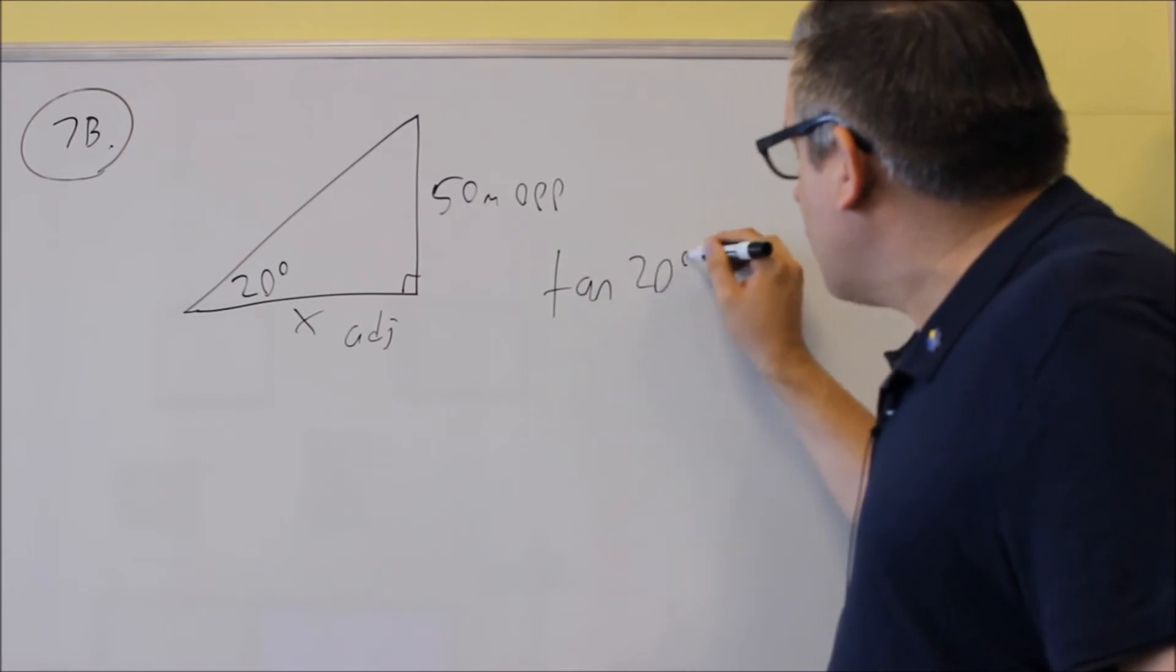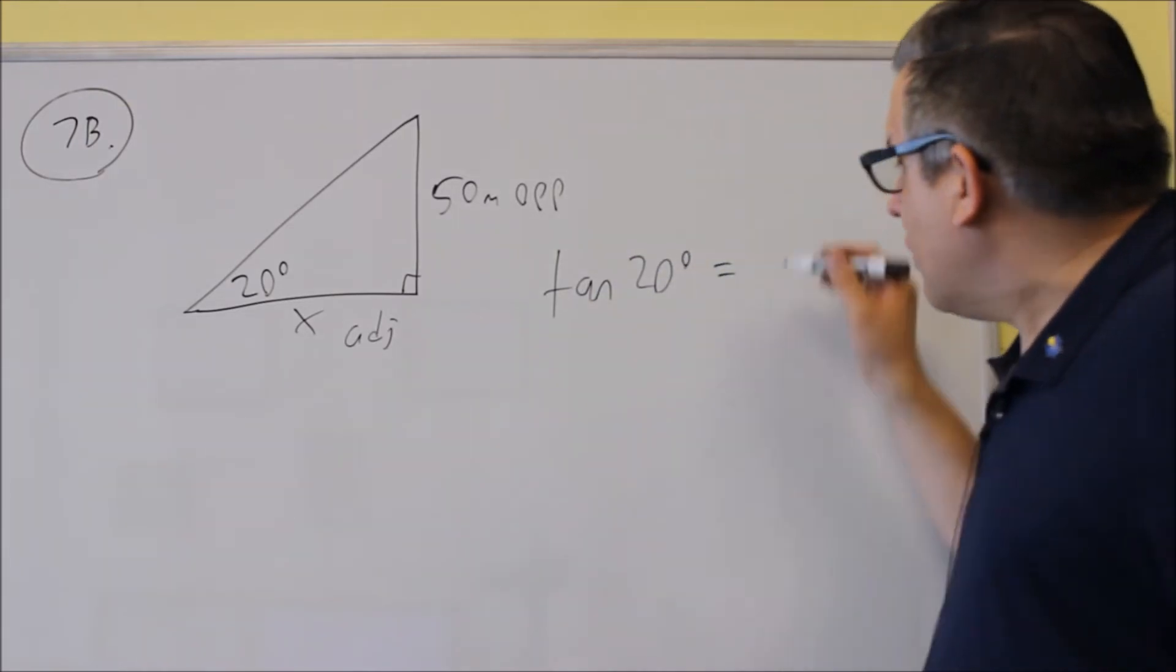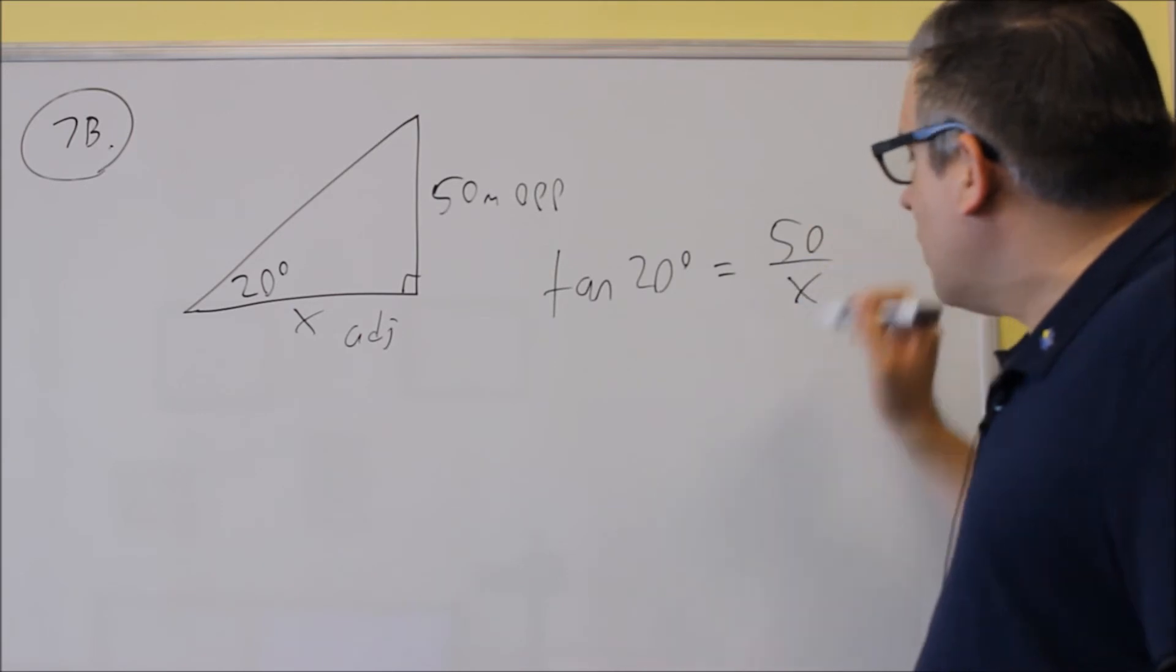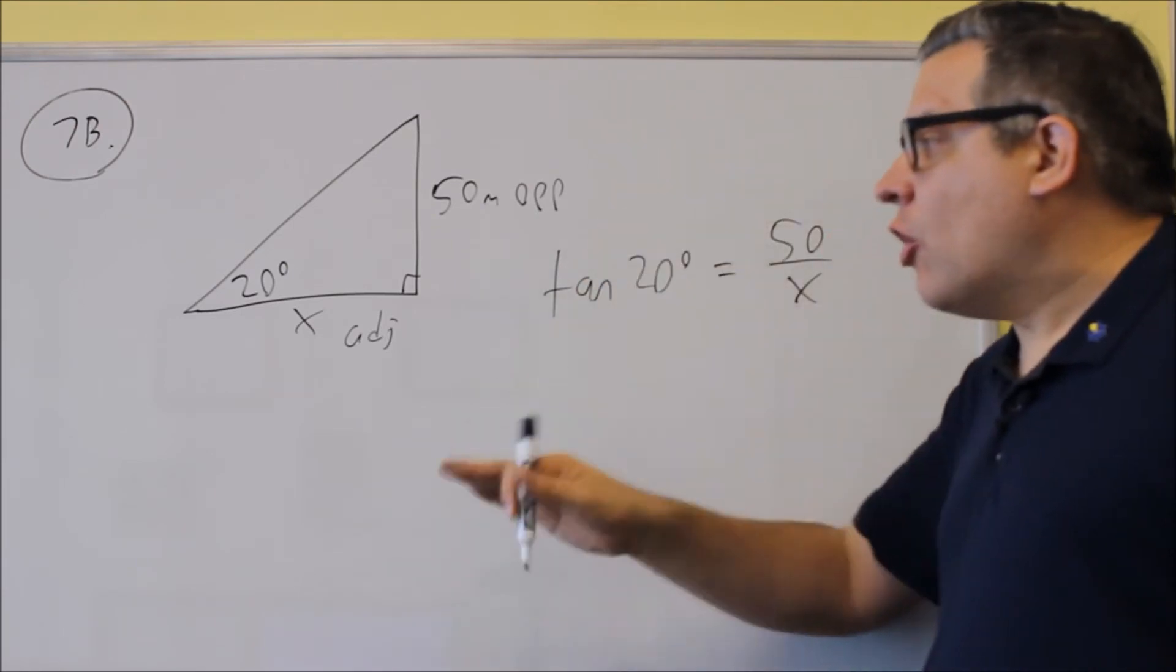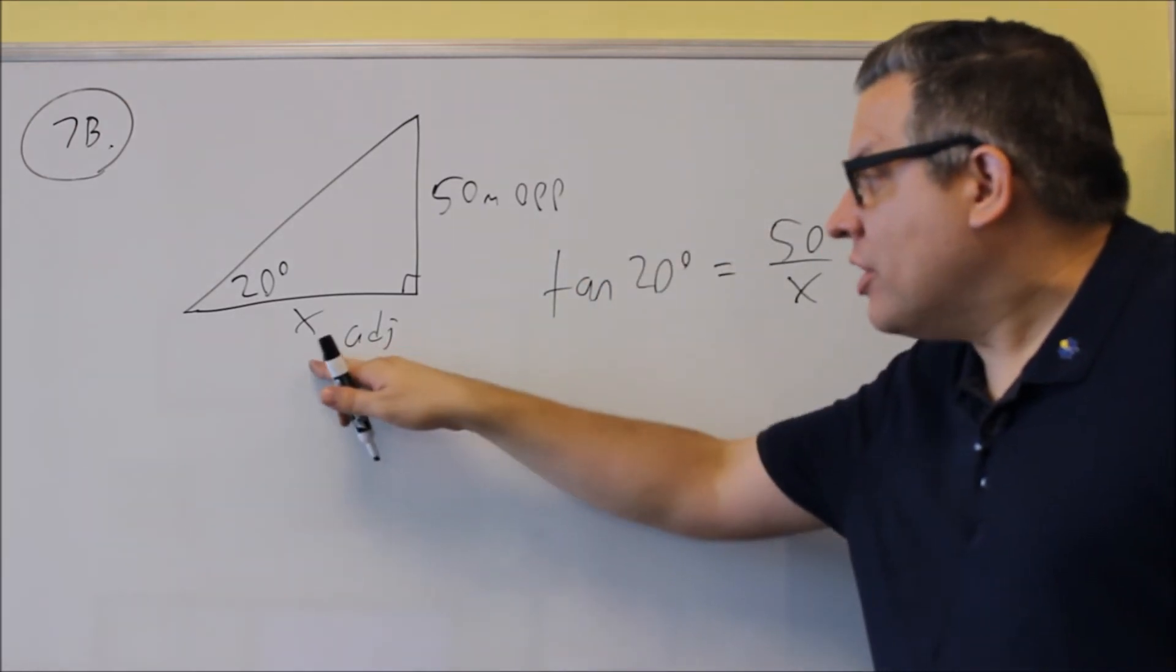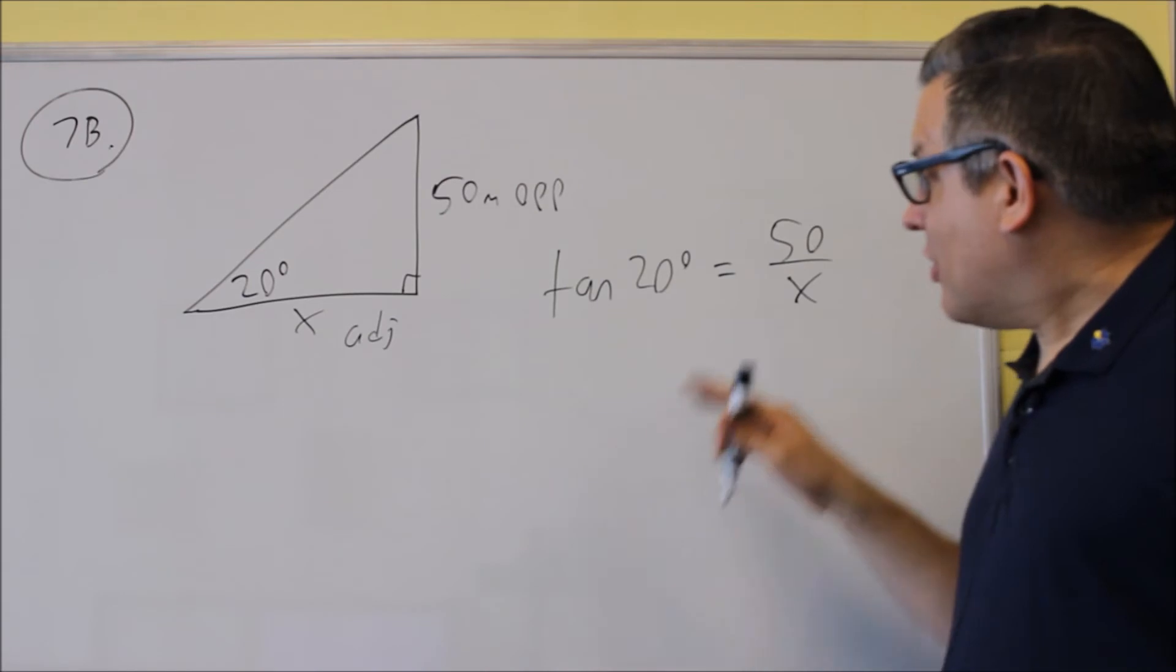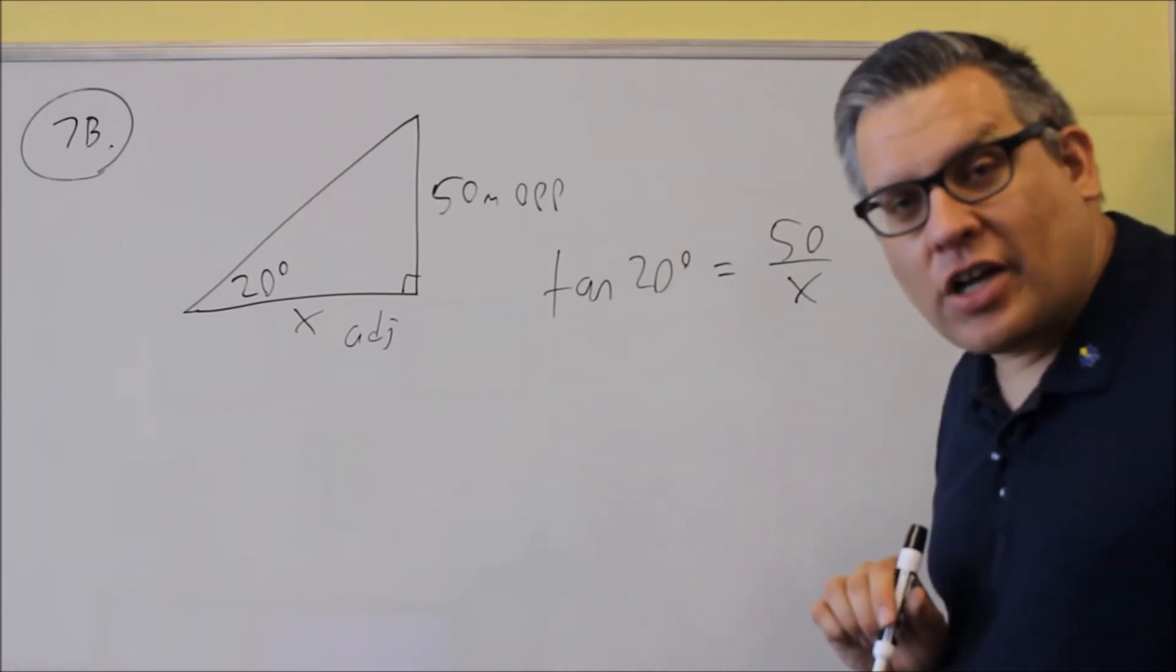So we're going to do tangent 20 degrees is equal to opposite over adjacent, 50 over x. We're putting the x on the bottom this time because the definition says opposite over adjacent, and we label the x as adjacent. So that's why it's on the bottom this time because of the definition for tangent.